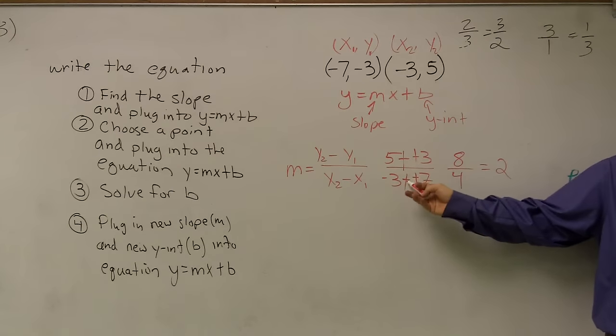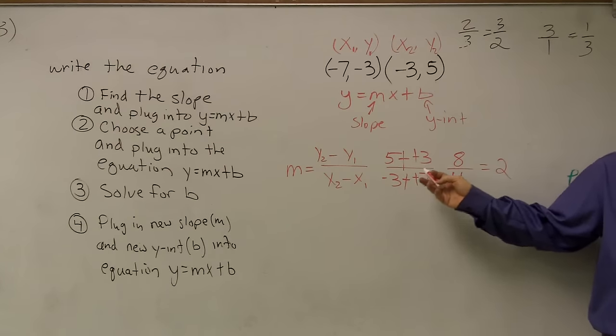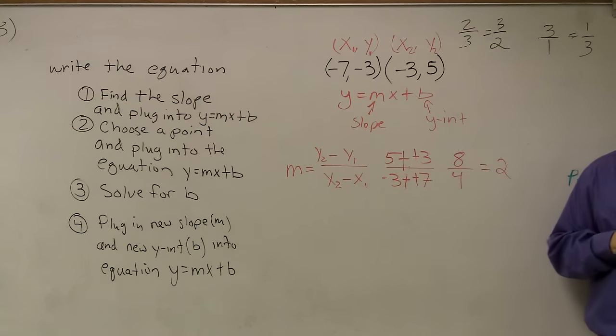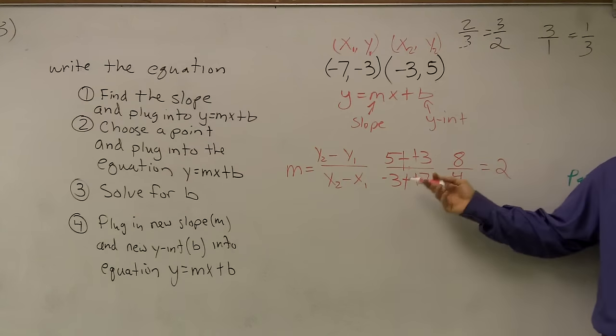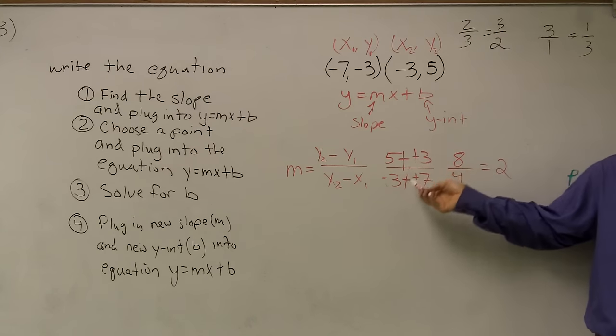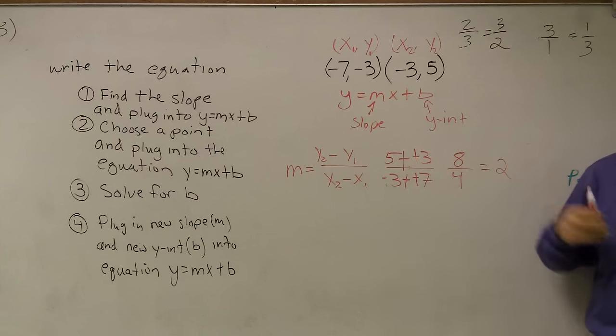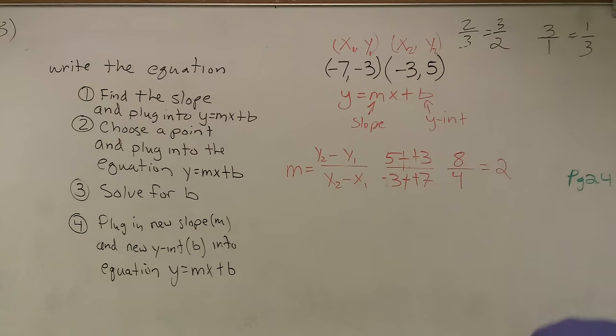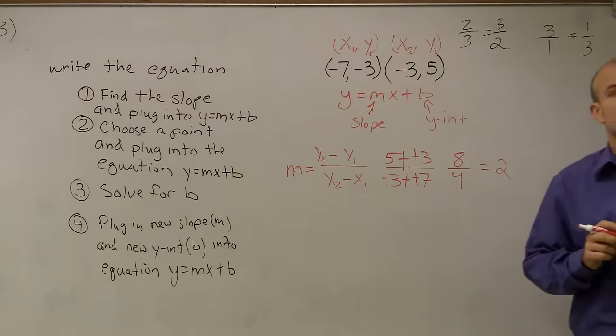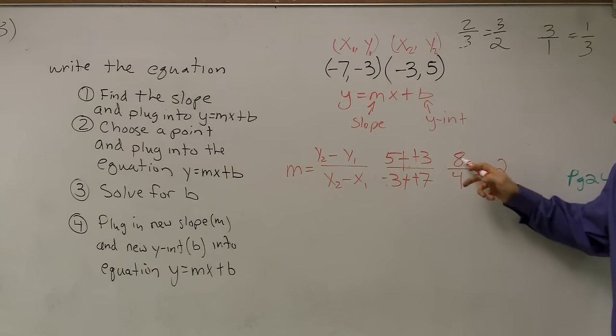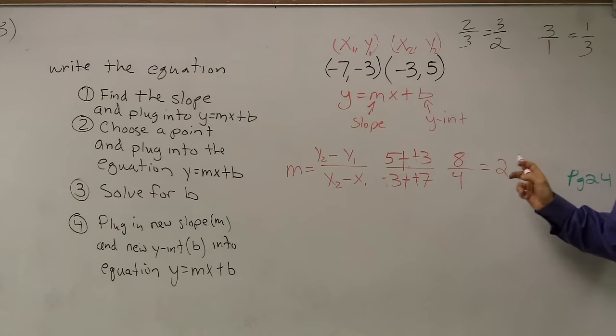Negative 3 minus a negative 7. When you have a number minus a negative number, it's a double negative, so it turns to a positive, or it turns to add. So it's a negative 3, add a 7, which gives you a 4. So therefore, yeah, what? I think it's 2. 8 over 4. 4 goes into 8 two times. That's where I got that.